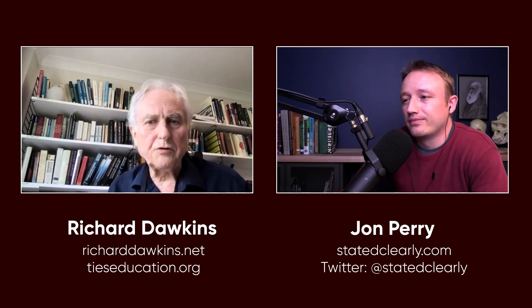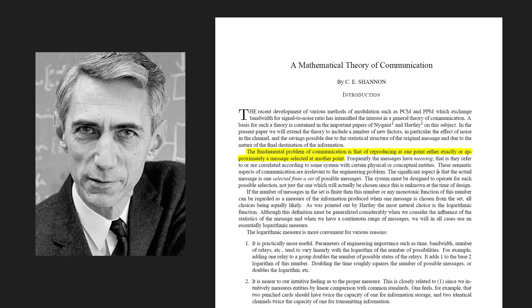Information theory has been used a lot in biology. Shannon worked for the Bell Telephone Company, and so he was concerned with the economics of information transfer. He wanted to think of ways in which information could be most economically encoded, and he came up with the idea of the bit of information as the fundamental unit. Information for him meant reduction of uncertainty, and his formula measured it like that.